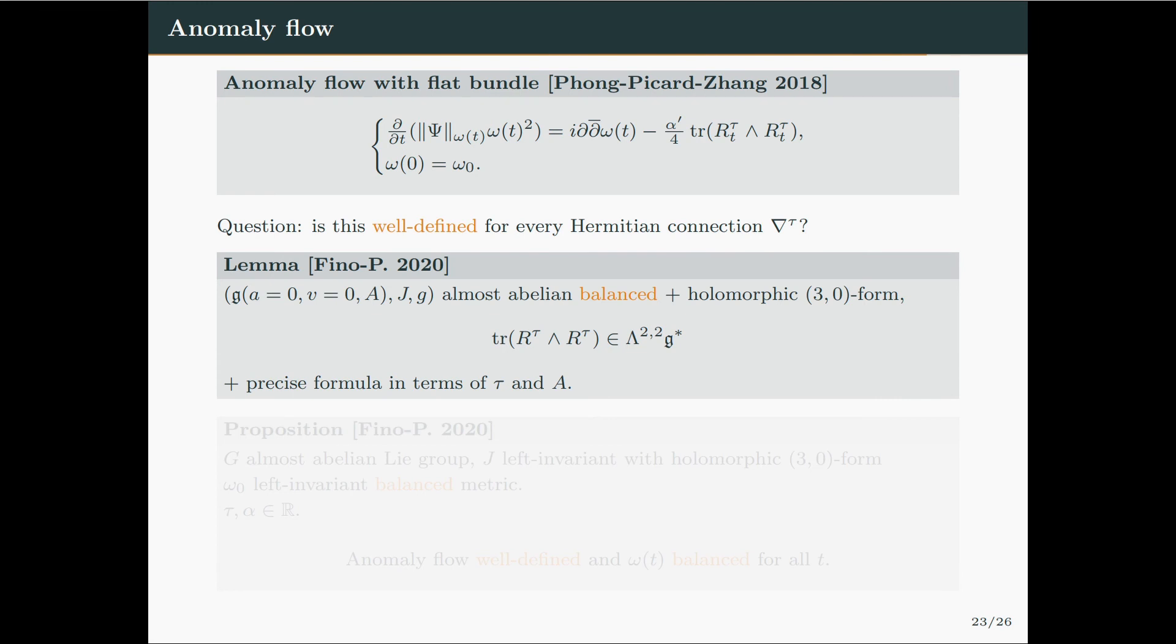The question we had was, is the anomaly flow well-defined for every Hermitian connection nabla_tau in the Gauduchon line? As I said earlier, this is not always the case. It is true in general only for the Chern connection. But in this almost abelian setting, it is actually true for every Hermitian connection in the Gauduchon line. We proved exactly that when a Hermitian structure on an almost abelian algebra is balanced and admits a holomorphic 3-0 form, which is the case we are interested in for the anomaly flow, then the trace term appearing in the right-hand side is always of type 2-2. And we also obtained a precise formula for it in terms of tau and A, which is the only surviving piece of algebraic data. And so we obtained exactly this, so that if we have an almost abelian group with a left-invariant complex structure admitting a holomorphic 3-0 form, and we assume omega_0 to be a left-invariant balanced metric, then the anomaly flow is well-defined for every tau, and the solution will remain balanced for all t.